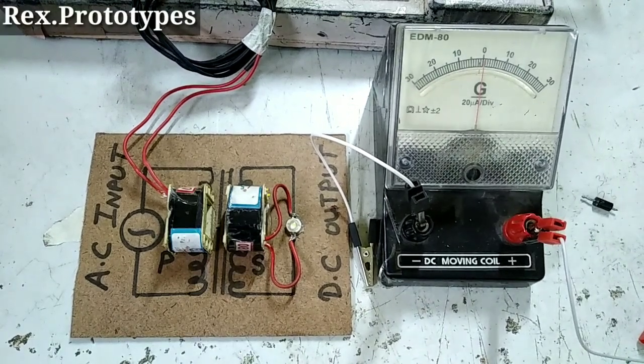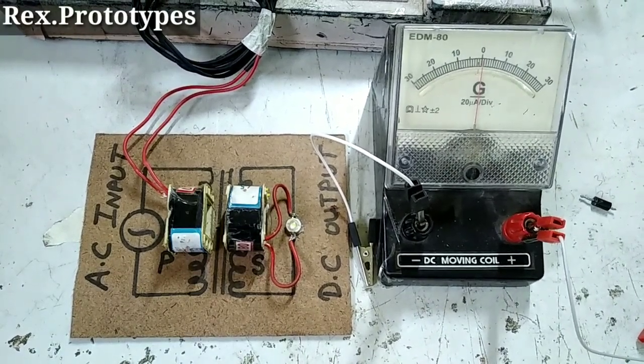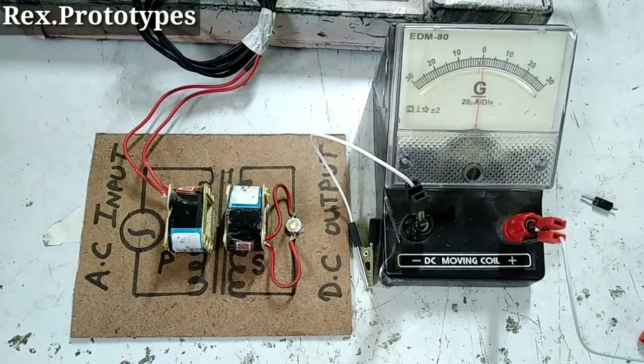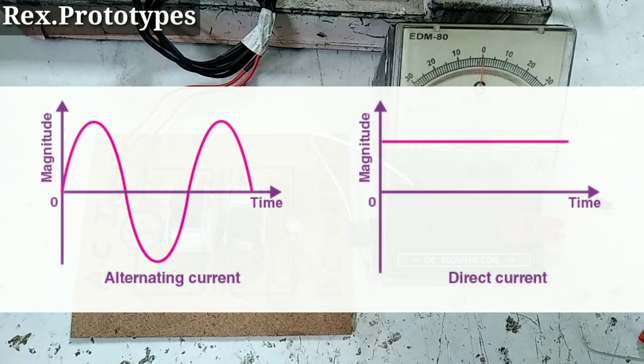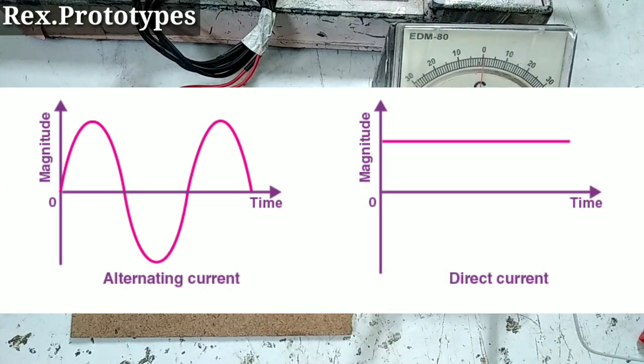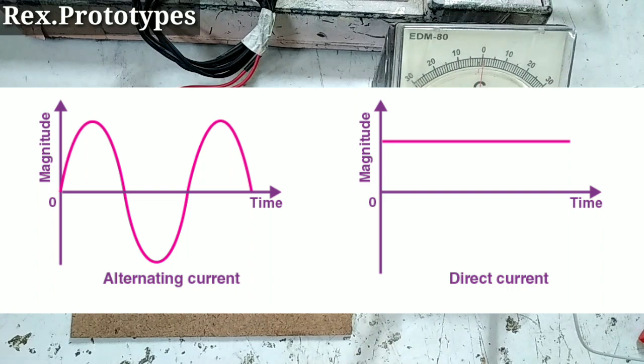Hello guys, today I have made a video to understand the difference between AC and DC. So according to the graph, this is AC and the graph on the right side is DC.